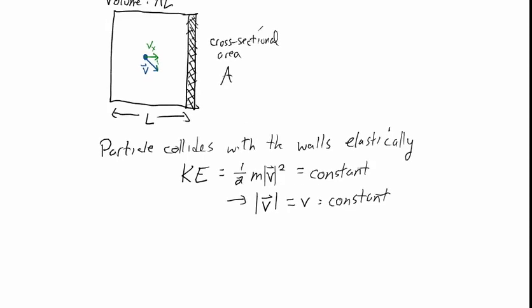This assumption that the particle collides elastically is actually a really good one for microscopic particles. In the macroscopic world, particles are always losing energy when they collide with things — inelastic collisions are normal. In the microscopic world, elastic collisions are much more normal. So this is not an outrageous assumption. We're also going to assume that the walls are perfectly smooth.